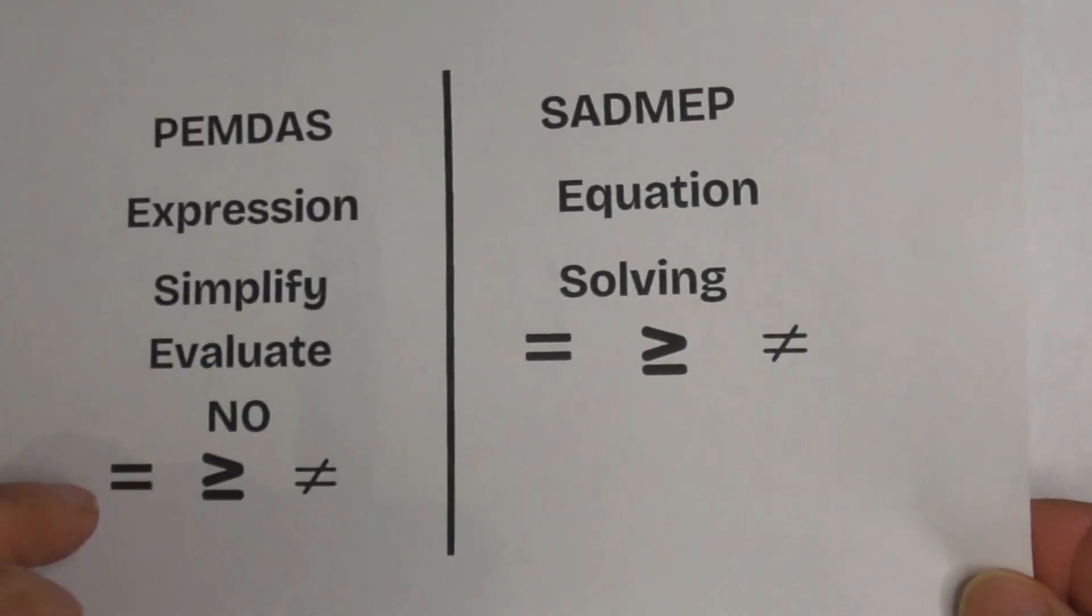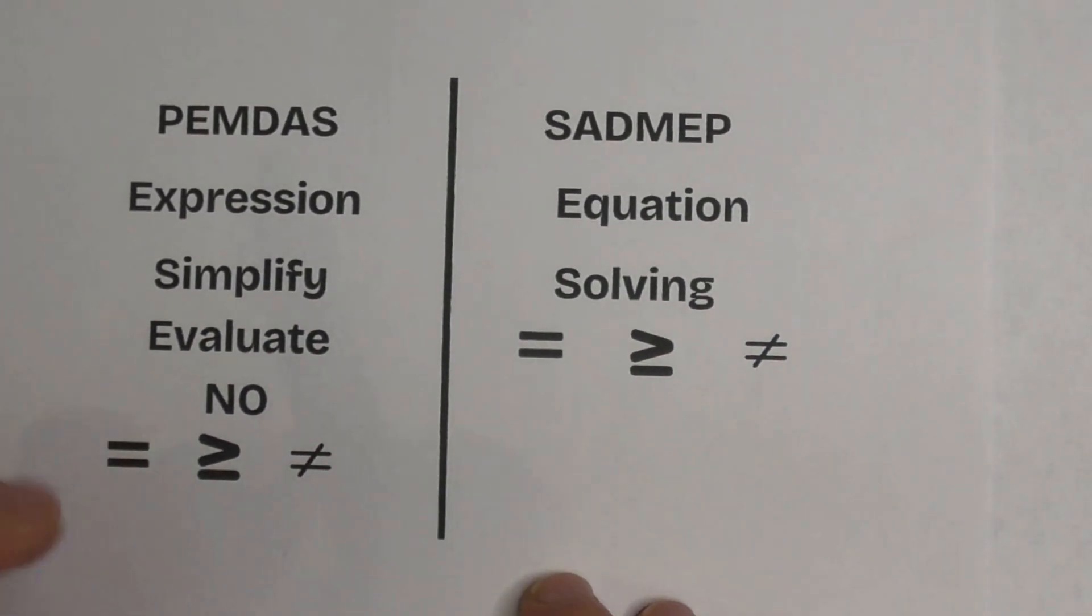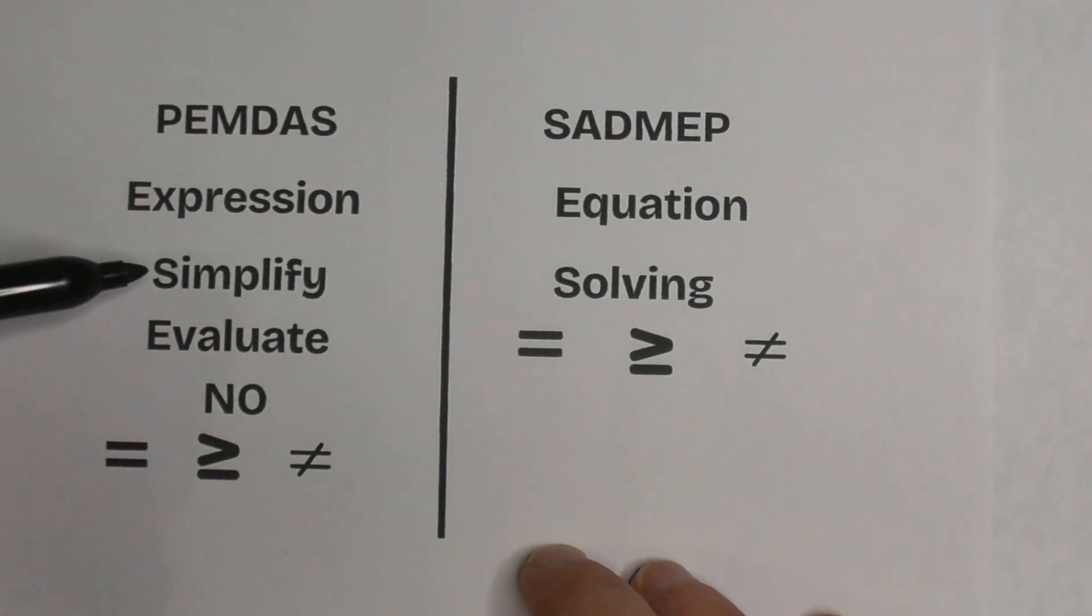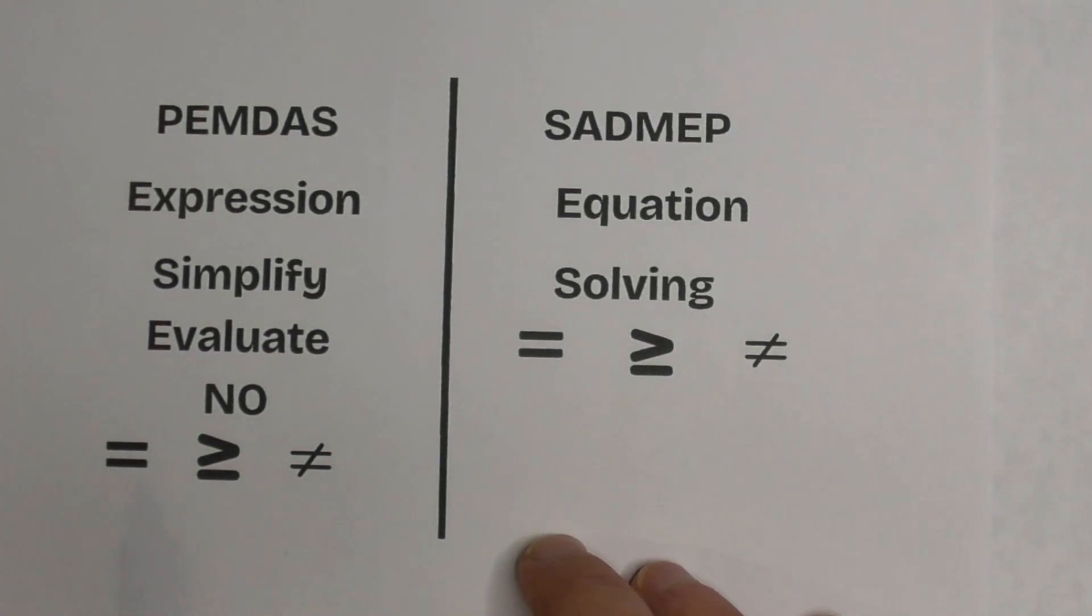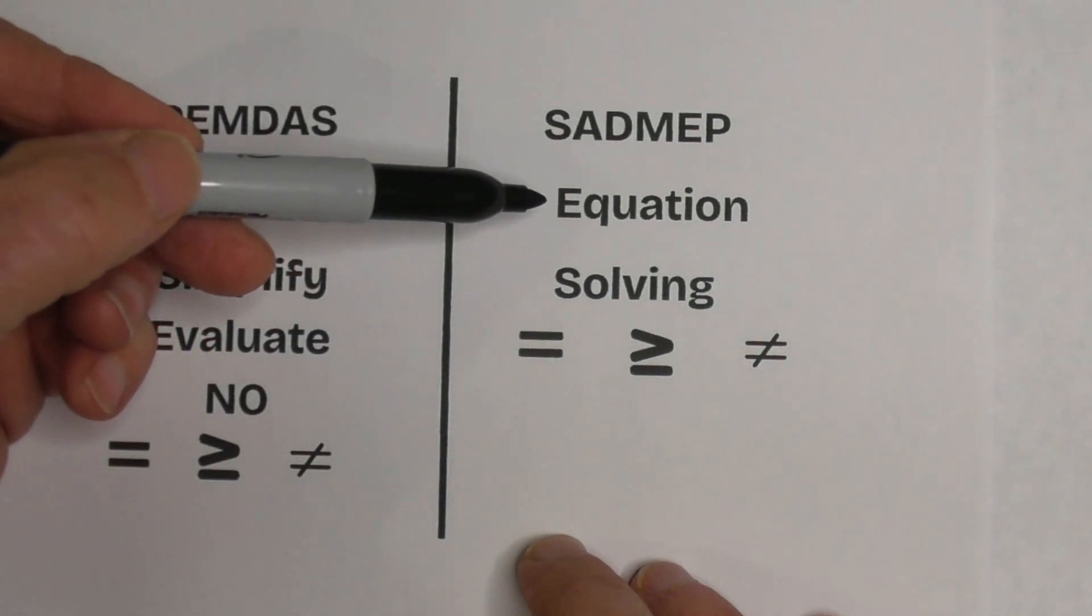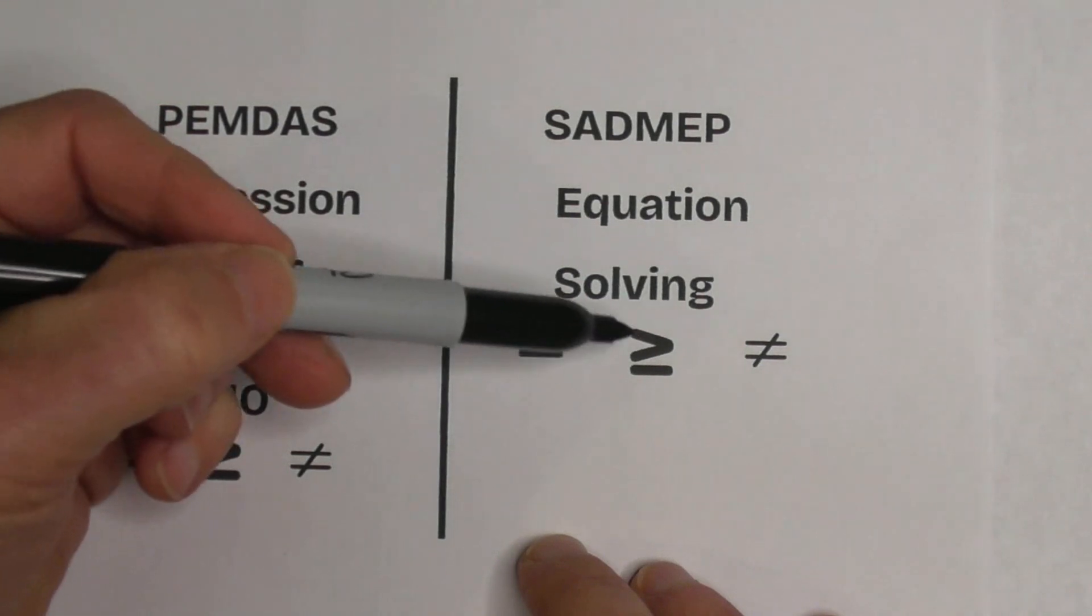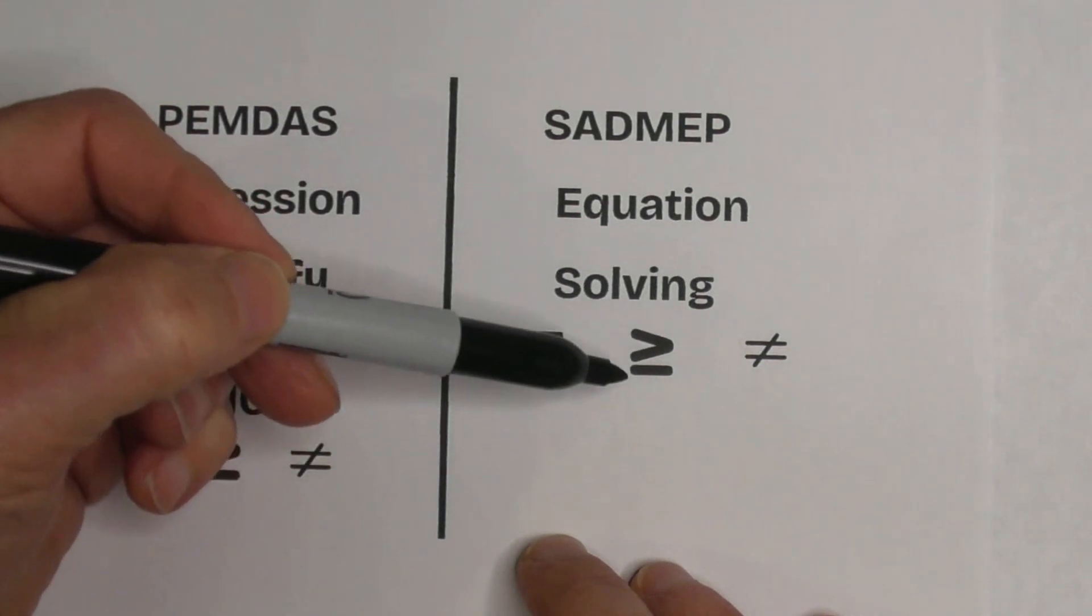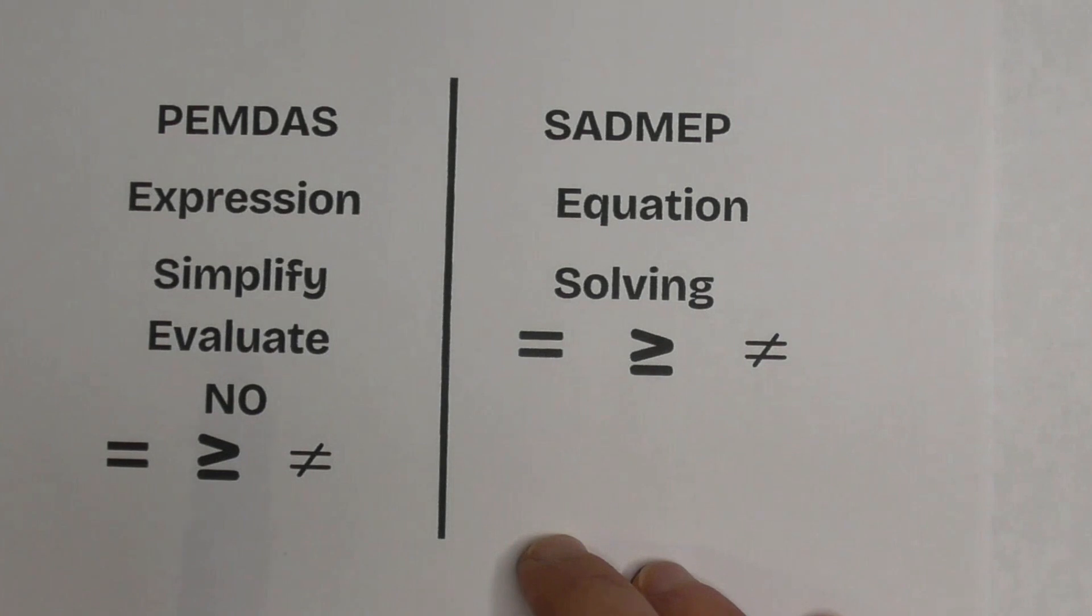Okay, up first, to make the decision between PEMDAS and SADMEP, let's look at it. With PEMDAS, you use an expression and you're either going to simplify or evaluate. A key easy way to remember, you are not going to have an equal sign, an inequality sign, or a not equal sign. You use SADMEP with an equation and you will have an equal sign, an inequality sign of some type, or a not equal sign.